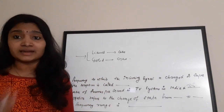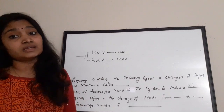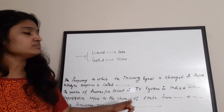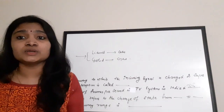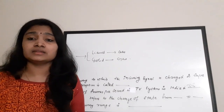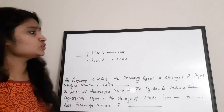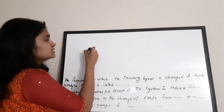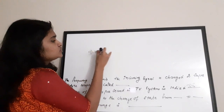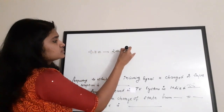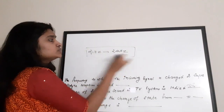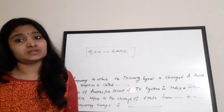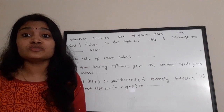Audio frequency range: the audible frequency range for humans, also called the audio frequency range, is from 20 Hz to 20 kHz. Please note this: audio frequency ranges from 20 hertz to 20 kilohertz.